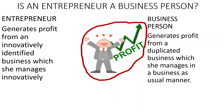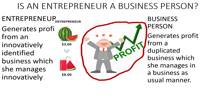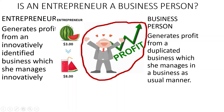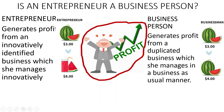Both of them generate profit, but the entrepreneur does so from an innovatively identified business managed innovatively. The business person generates profit from a duplicated business managed in a business-as-usual manner. For example, an entrepreneur might buy a product, add value to it, and sell it at a higher profit — say five dollars — because they've done something unusual. The business person also buys and sells, but in the same way as everyone else, earning only one dollar profit.